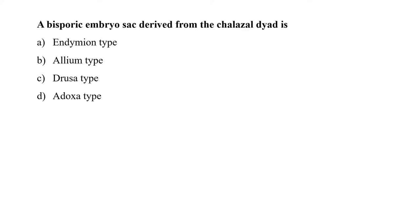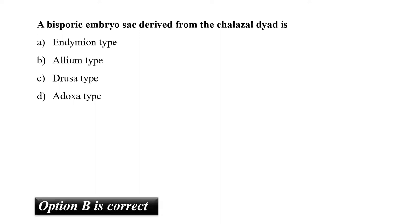The next question is: a bisporic embryo sac derived from the chalazal dyad is? As we know, bisporic embryo sacs are 8-nucleate and 7-celled. There are two types: one is Allium type and the second is Endymion type. In the Allium type, the embryo sac is derived from the chalazal dyad, while in the Endymion type, the embryo sac is formed from the micropylar dyad. So our correct option is B, that is Allium type.